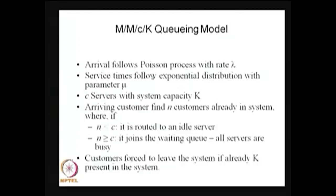If the system size is full — that means C customers are under service and K minus C customers are waiting in the queue — then whoever comes will be rejected and forced to leave the system. Therefore there is both waiting and blocking due to finite capacity. We always choose K such that K is greater than or equal to C. If K equals C it is a lost system; if K is greater than C, then K minus C customers can wait in the queue.